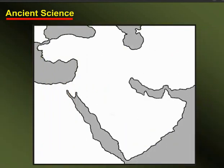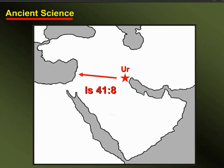This ancient understanding of geography even appears in the Bible. Take, for example, when God called Abraham to the promised land. In Isaiah 41, he calls him from the ends of the earth, from the very edges of the earth. So from an ancient Near Eastern perspective, Ur was indeed that very edge of the world. But of course, from our perspective, Ur is just at the edge of the Persian Gulf.